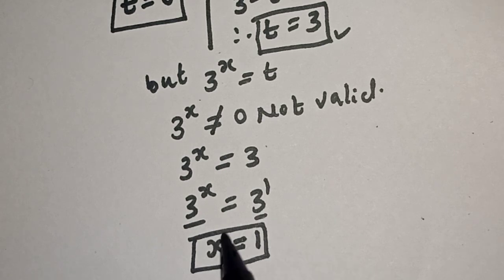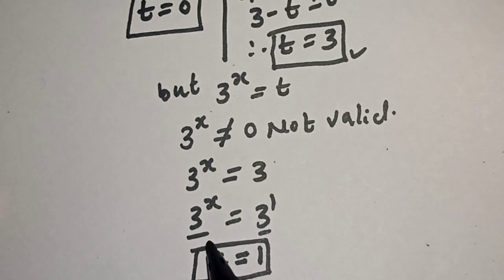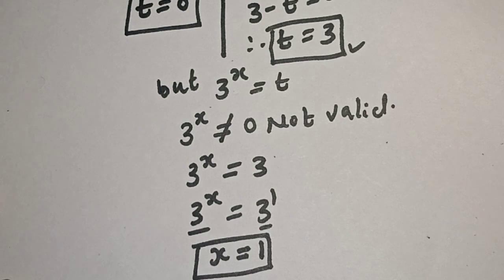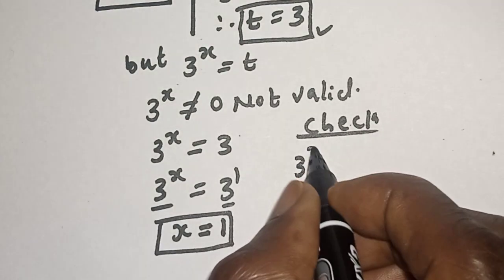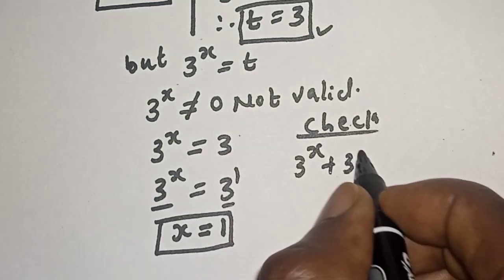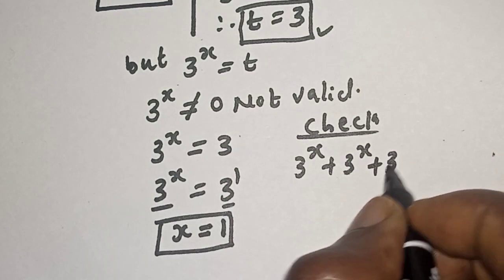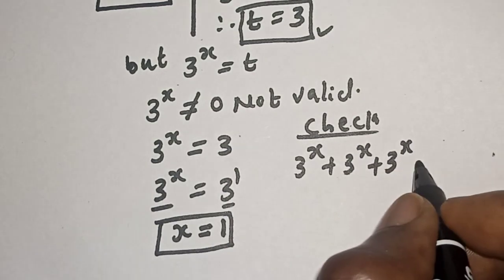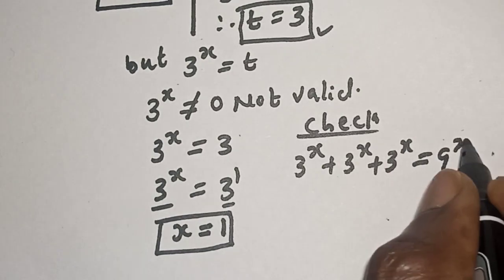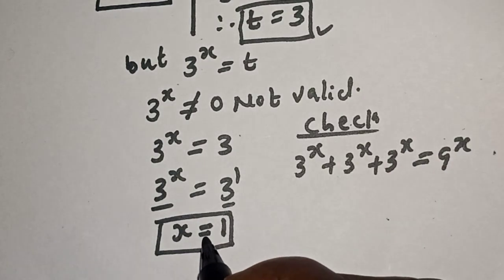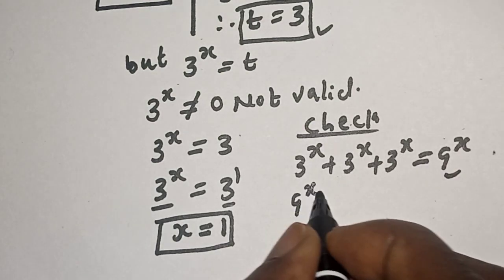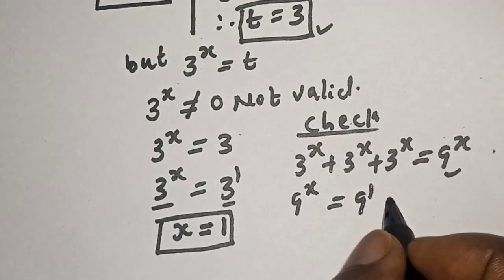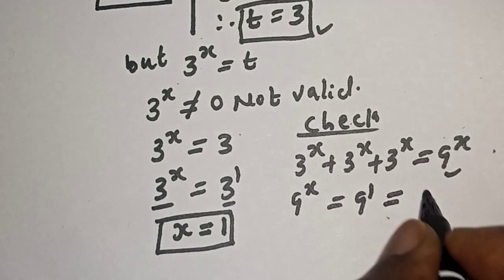We can check to confirm if our answer is right. In order to check, we use the given equation: 3 raised to power s plus 3 raised to power s plus 3 raised to power s must equal 9 raised to power s. When s is equal to 1, the right-hand side gives 9 raised to power 1, which equals 9. This confirms our answer is correct.